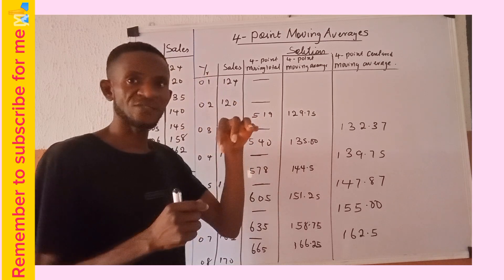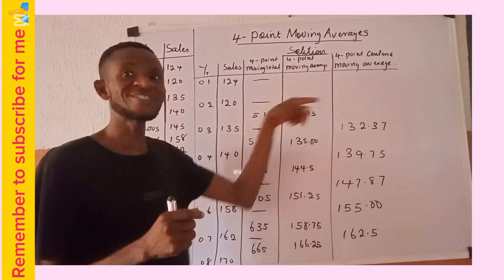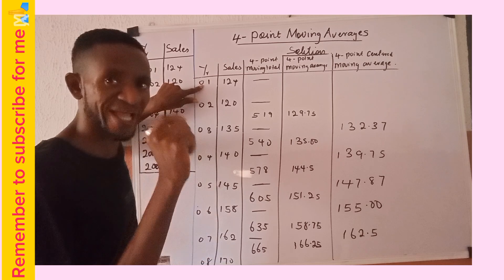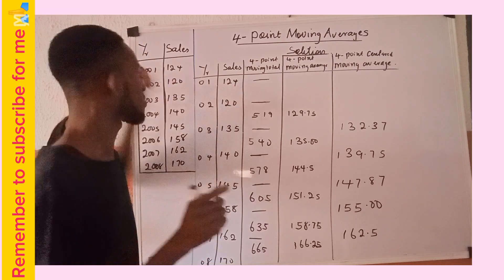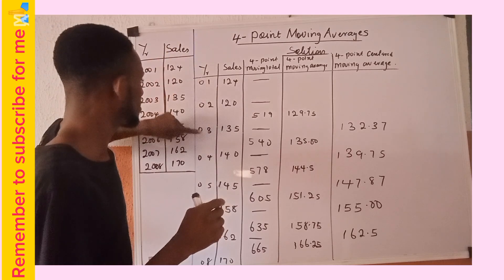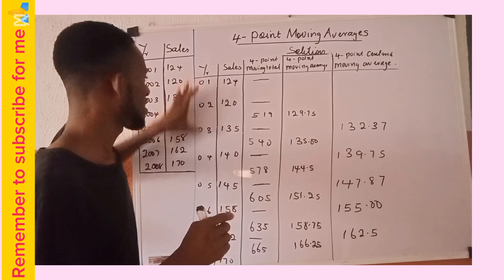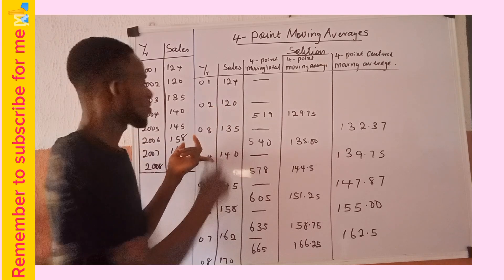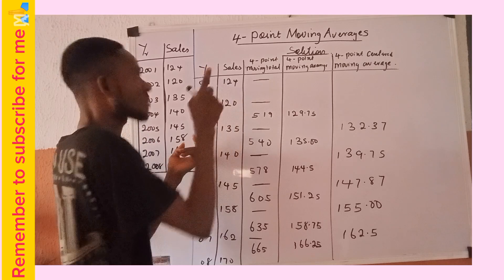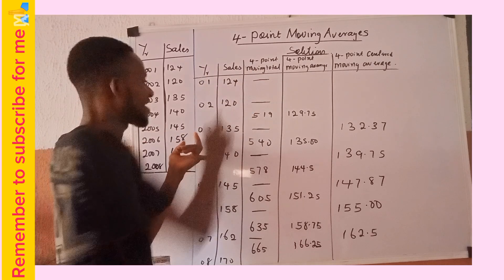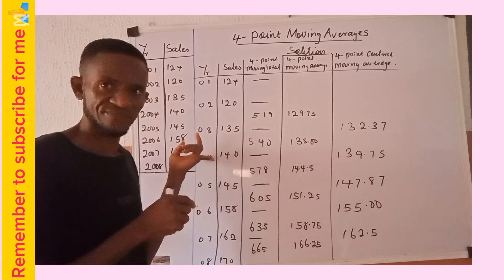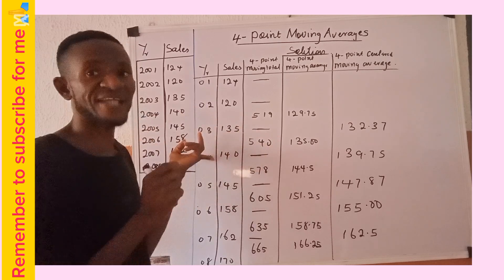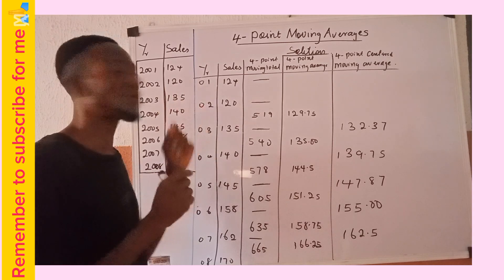To obtain the four-point moving averages, we begin from the first data point and count four. We are concerned with 124, 120, 135, and 140. When we sum all these numbers, the four-point moving total is 519. The question becomes: where do we write 519? It does not belong to 2001, 2002, 2003, or 2004 alone — it belongs to all of them. So we obtain the center point across years 2001 to 2004.